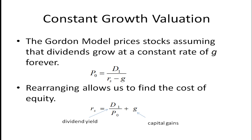One model we use to find the cost of equity is the Gordon model, or the Gordon Growth model. This is a model that prices stocks based on the assumption that dividends will grow at a constant rate of G forever. The price today is going to be the dividend one period in the future divided by the cost of equity minus the growth rate of dividends. If we rearrange the terms, we can solve for the cost of equity, Rs: it's going to be D1 over P0 — the dividend yield — plus G, which is the capital gains.